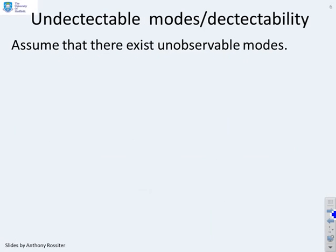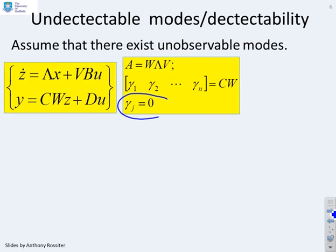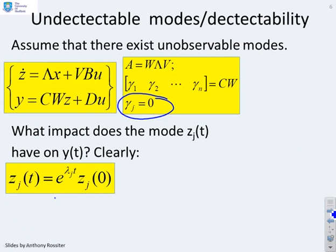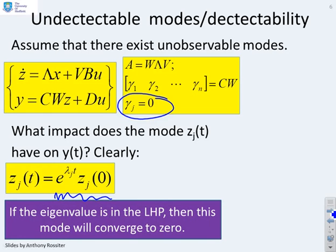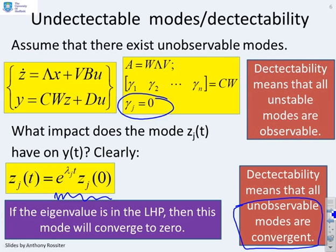What about undetectable modes, or detectability? Assuming there exist some unobservable modes — that is, there exists a column of the matrix CW which is zero — the corresponding mode cannot be observed. The underlying dynamics of this mode are given by e to the lambda J T times ZJ(0), and this mode we cannot observe. If the eigenvalue is in the left half plane, this mode will converge to zero; if it's in the right half plane, this mode may diverge to infinity. Detectability means that all unobservable modes must be convergent, and conversely, all unstable modes must be observable.